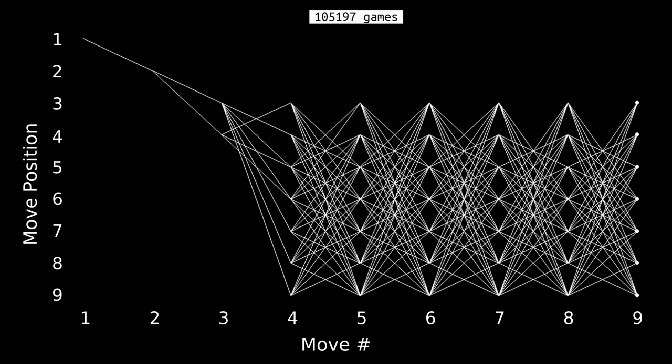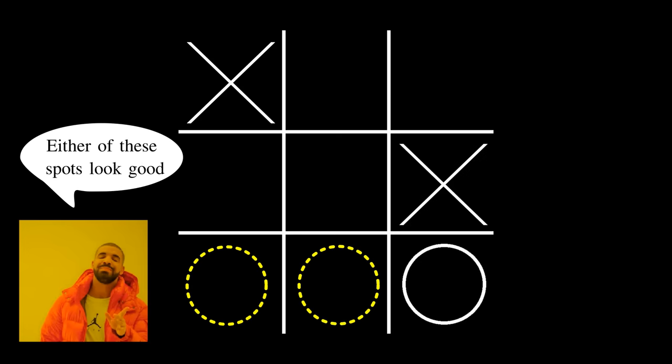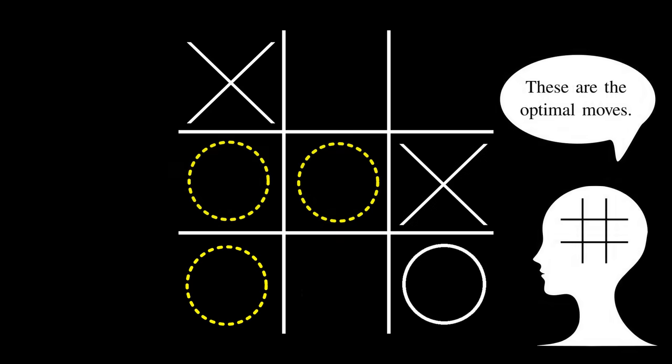So in trying to count the possible tic-tac-toe games, how can we account for both the simple heuristic play from my previous video, in which players just try to get two in a row when they can, and the more calculated forward-thinking play of an ideal player?